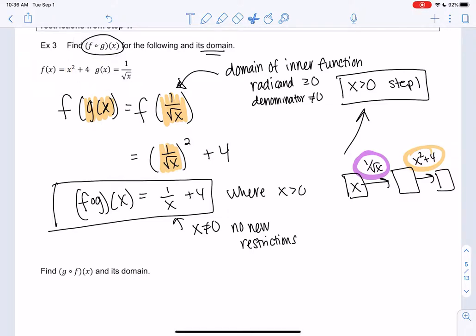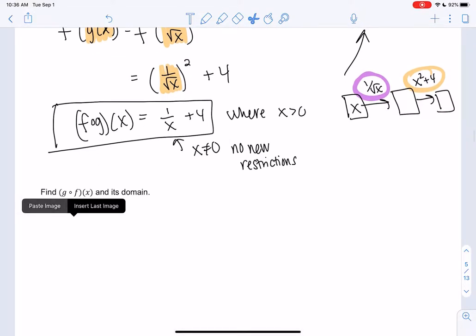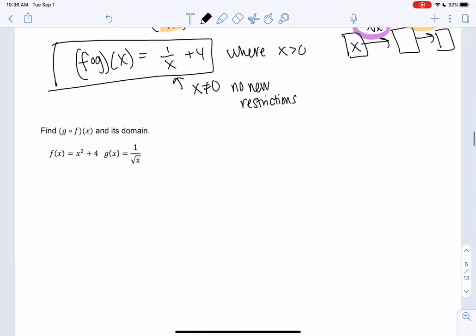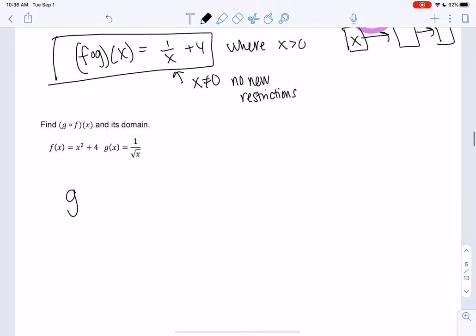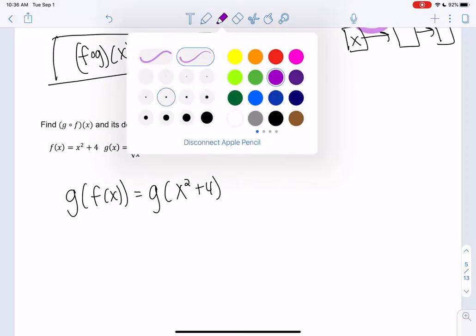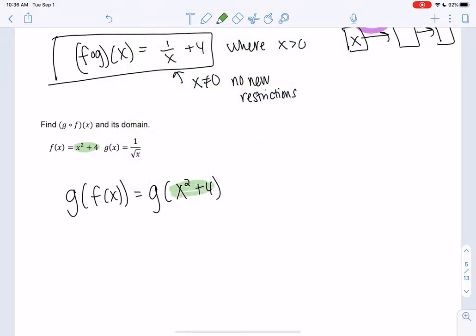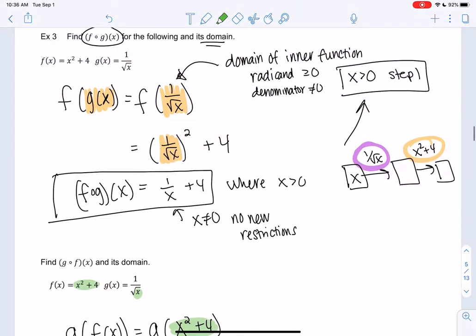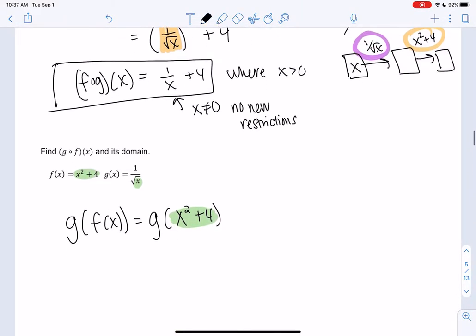So you can do fog, and you can do g of f. And they're not the same thing, so order does matter. And you'll see that we get a different option here. So on this one, we're going to go backwards. We're going to say g(f(x)). So I'm going to plug in x squared plus 4 into g of x. So it's backwards. And it is not the same function you'll see in a second.